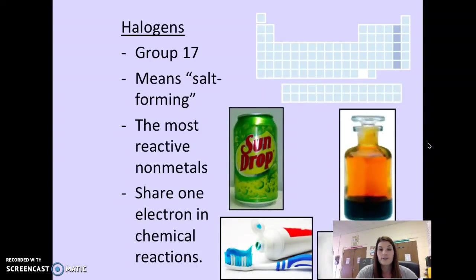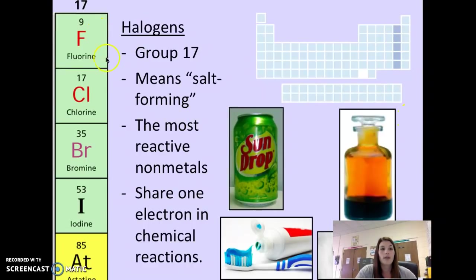The halogen family is group 17 right here. The word halogen, the stems in it literally means salt forming. Halo means salt and gen means to produce or to form. These are the most reactive nonmetals. So they are always ready to join up with other elements and make compounds. They share one electron in chemical reactions.